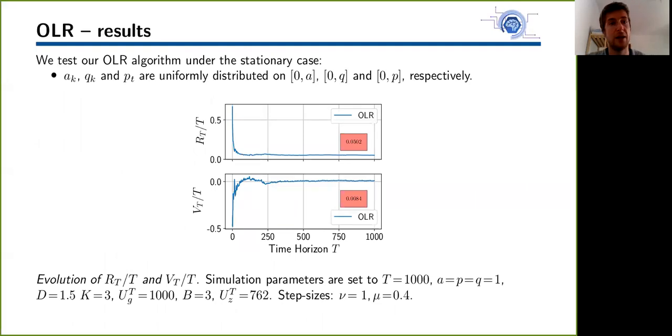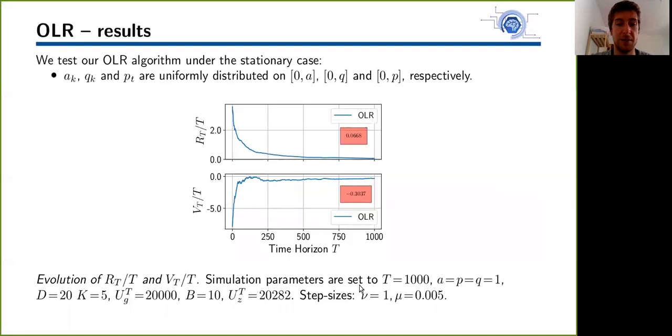We test our OLR algorithm in the stationary case first, where price and demand are considered uniformly distributed. Here we observe that we have sublinear regret and fit given that we have as well sublinear variations of the system, and these results are achieved with this choice of step sizes. If we change the step sizes by taking a lower Mu, we see that we get actually much better convergence even if the variations of the system are not sublinear anymore. This is with an even lower Mu and we see that we get even negative regret in this case.